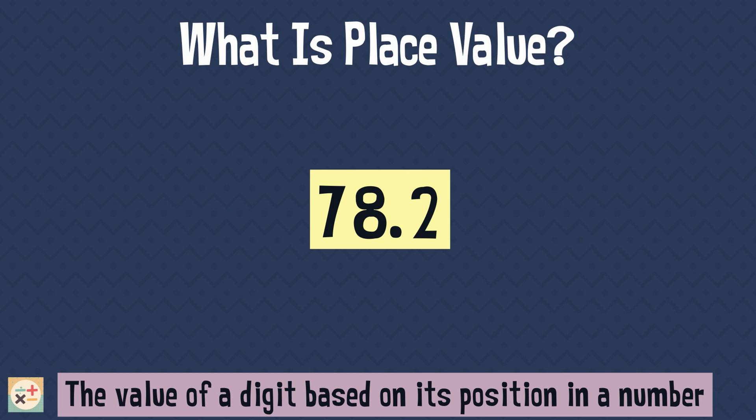Here is a decimal number, 78.2. This is a digit within that decimal number. And the position of that digit within the number tells us what the place value is.